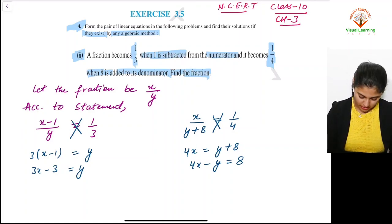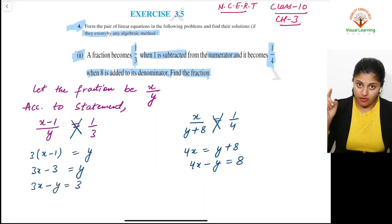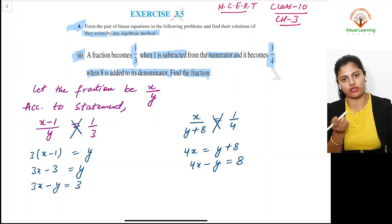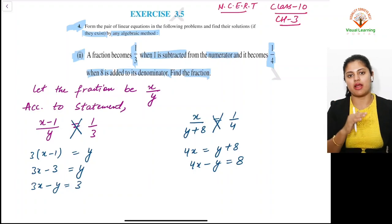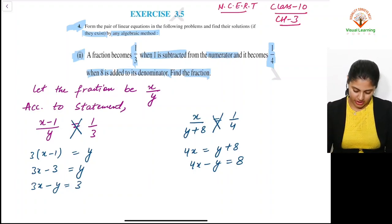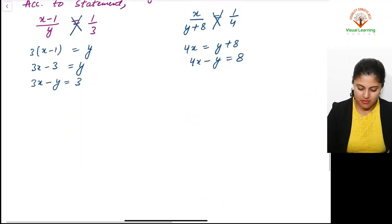So 3x - y = 3. When y moves across equals, it becomes -y. When -3 moves across equals, it becomes +3. Plus becomes minus and minus becomes plus when we move across equals.